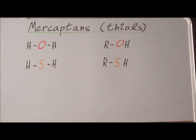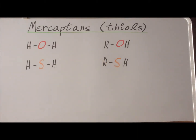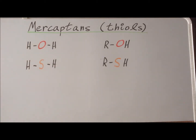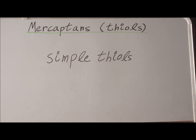Similarly, as we did with alcohols, if we start with the compound hydrogen sulfide and replace one of the hydrogen atoms with an alkyl group, that again gives us a thiol — in the same way that substituting one of the hydrogen atoms of water gives us an alcohol. Please see the following figures for computed structures of four of the simplest thiols.